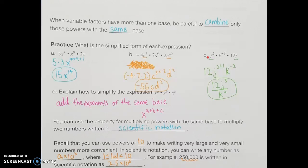For the last expression with j and k: I have two j bases to combine, and only one k variable, so I leave k by itself. The constant 12 comes first. For the j's, 2 plus 1 more gives 3 total powers of j. Since we don't want negative exponents, even though k starts with a power of negative 2, we rewrite it by flipping k to the denominator, making it k to the second. Fully simplified: 12j to the 3rd over k squared.